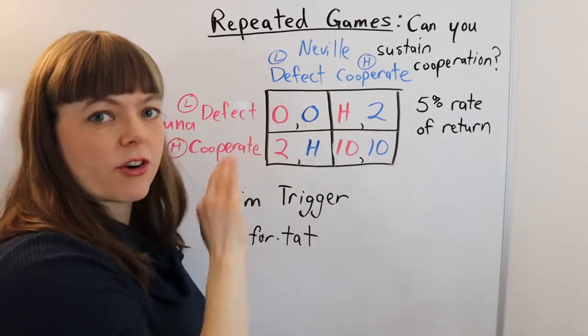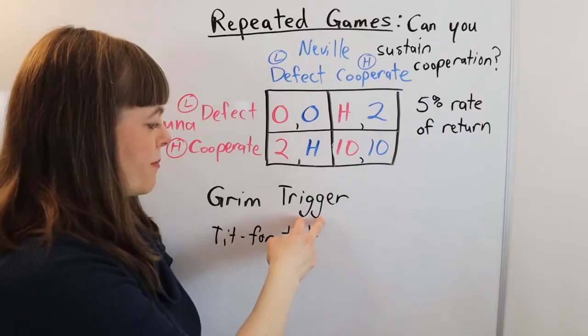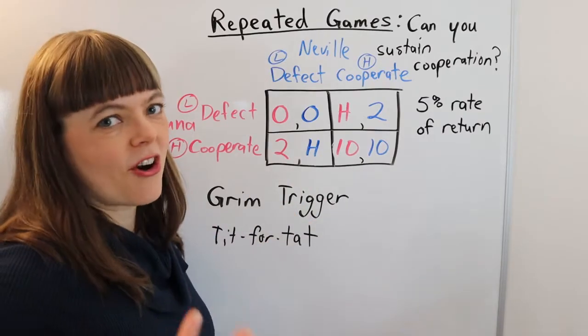You've basically got this punishment strategy that you will cooperate until they defect. Once they defect, you will never cooperate. That is grim trigger. And that's the one we're going to use for our example here.